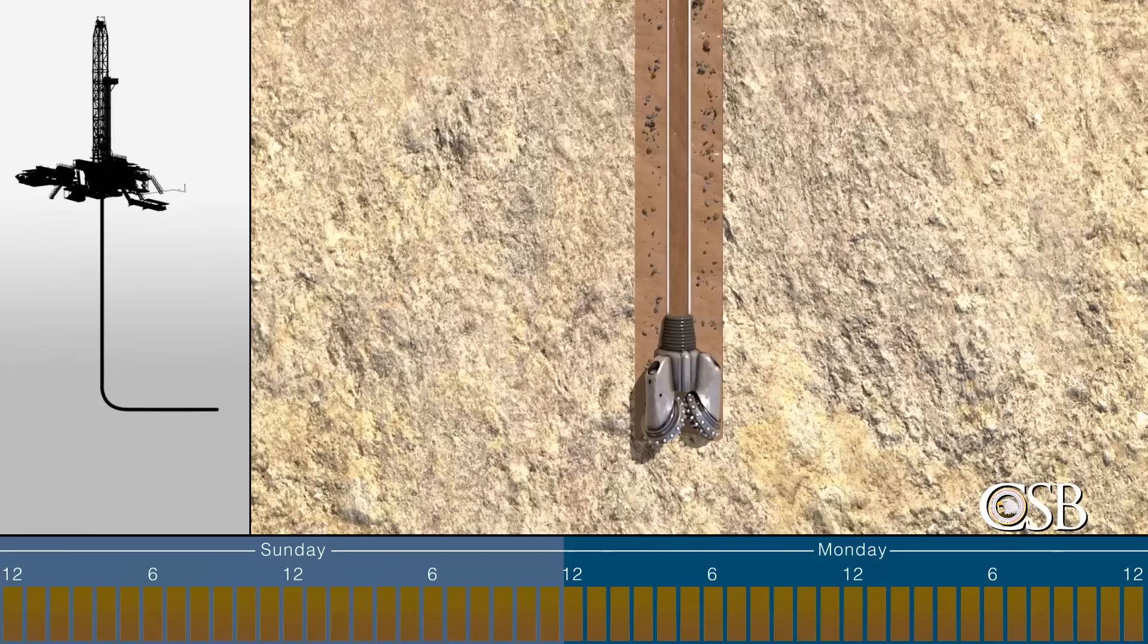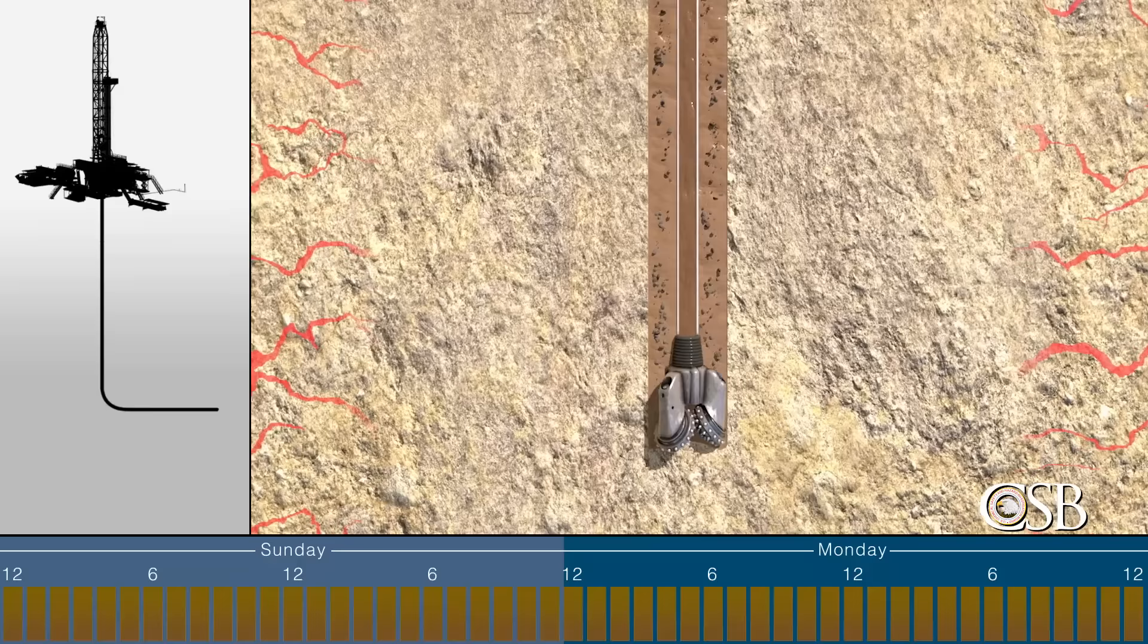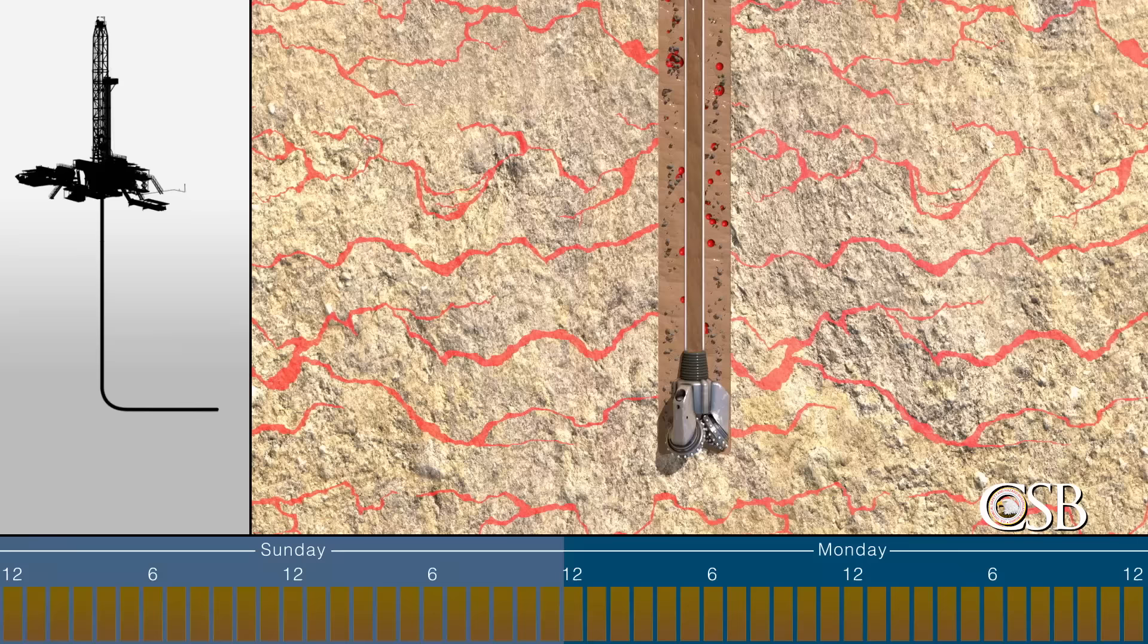Mud, however, has another important function. It is designed to add pressure to the well so that gas within the exposed geological formation is unable to enter the well during drilling. If that happens and the gas is not detected, it can lead to a dangerous blowout.